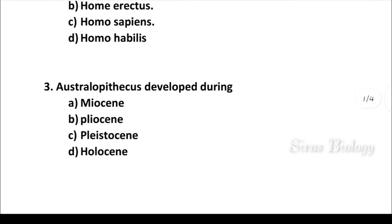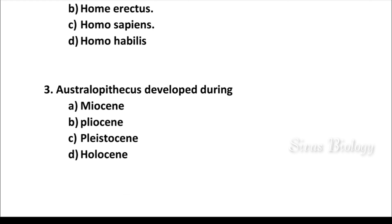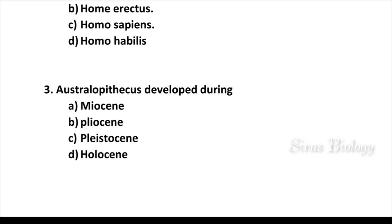Question number 3: Australopithecus developed during which period? Options: Miocene, Pliocene, Pleistocene, Holocene. The correct answer is B — Pliocene.